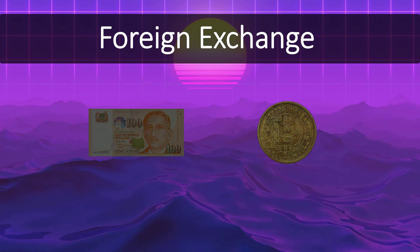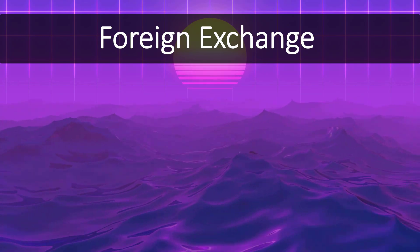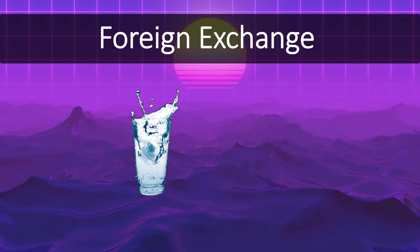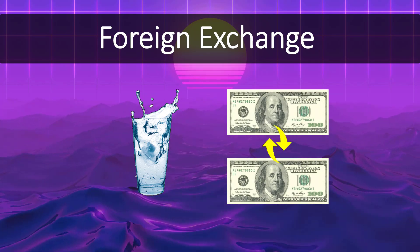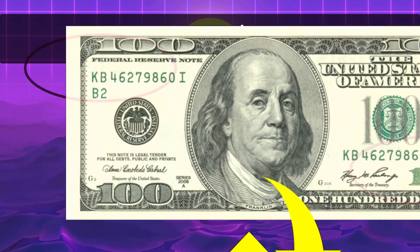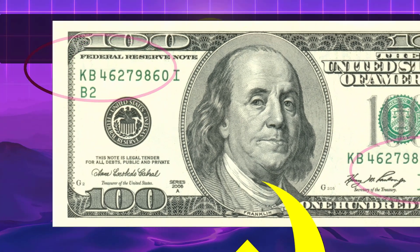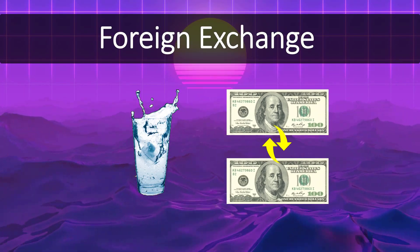It's because tokens, like currencies, are both liquid, meaning they can be moved around and utilized quickly, and fungible, meaning hot swappable. You don't care about the serial number on your US dollar, and you'll happily trade it for one with a different serial number. That's fungibility.